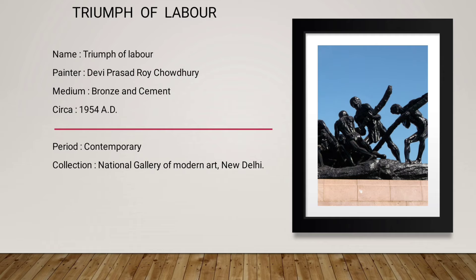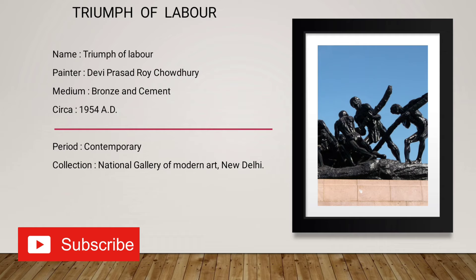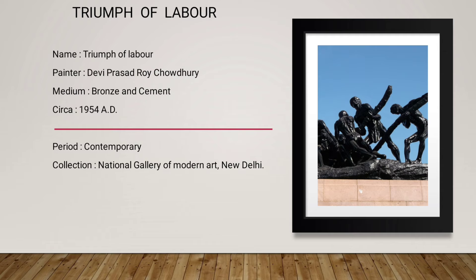For this purpose, the upper part of the body is naked, and the lower part of the body is covered with a piece of cloth. In this sculpture, there are four human figures in different action poses and different positions. They are trying to remove a huge rock from a wooden block. The contraction and extraction of muscles are beautifully shown in this sculpture.